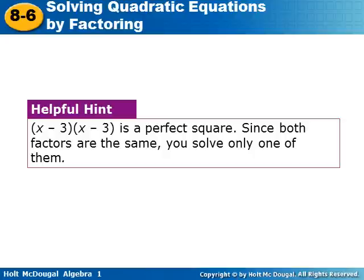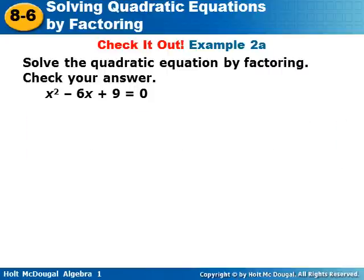Note: when you have a perfect square like (x minus 3) times (x minus 3), since both factors are the same, you only have to solve one of them. For example, x² minus 6x plus 9 equals zero — try this one yourself. We factor the trinomial by finding two numbers that multiply to 9 and add to negative six: negative three and negative three. Or you may recognize it as a perfect square trinomial, giving (x minus 3) times (x minus 3), also written as (x minus 3) squared.